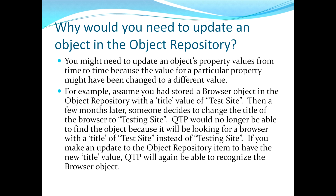This moves us to the second topic: why would you need to update an object in the object repository? You might need to update an object's property values because the value for a particular property might have changed. For example, assume you had stored a browser object with the title value of 'test site'. Then a few months later someone decides to change the title to 'testing site'. QTP would no longer be able to find the object because it will be looking for a browser with the title 'test site' instead of 'testing site'. If you update the object repository item to have the new title value, QTP will again be able to recognize the browser object.